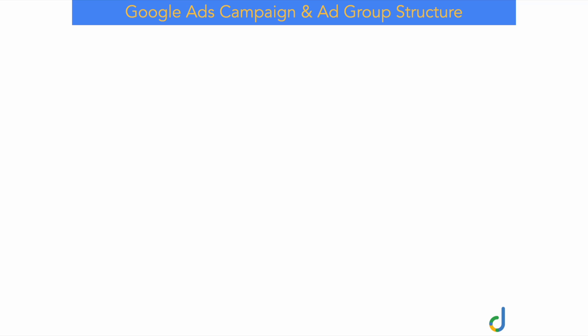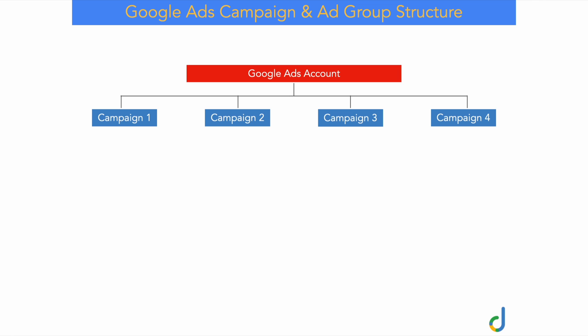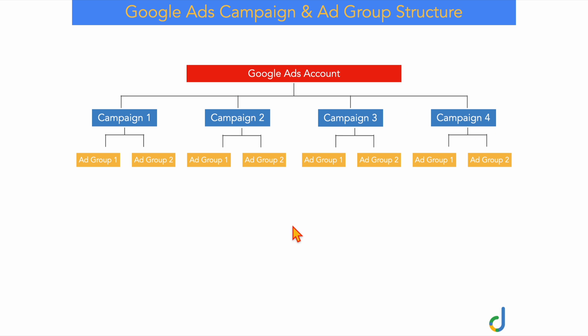This is the Google Ads campaign structure that you want to be using for your account. At the top level, we have our Google Ads account, which is your core account where we have all of your different campaigns. At the campaign level, these are your high-level products. So if you're a clothing store wanting to create a campaign for selling men's clothes and women's clothes, and then men's shoes and women's shoes, these are the core campaigns. You'd have a men's clothes campaign, a women's clothes campaign, and your two shoes campaigns.